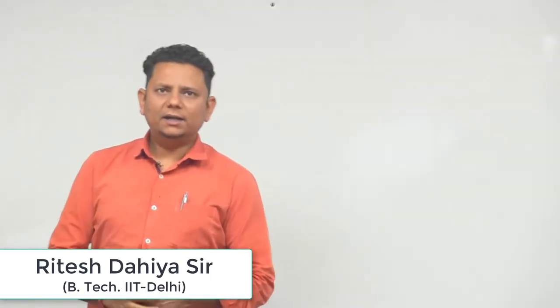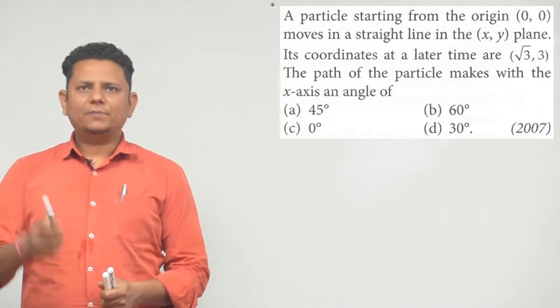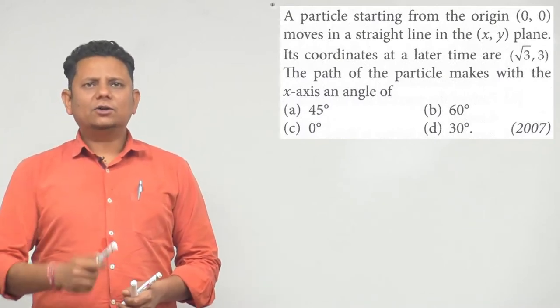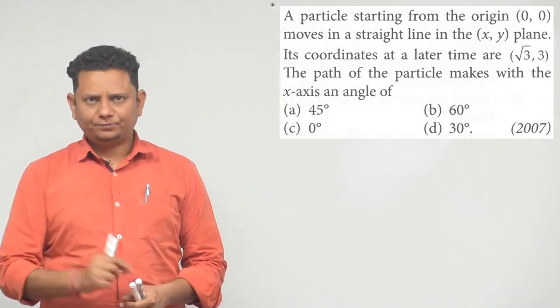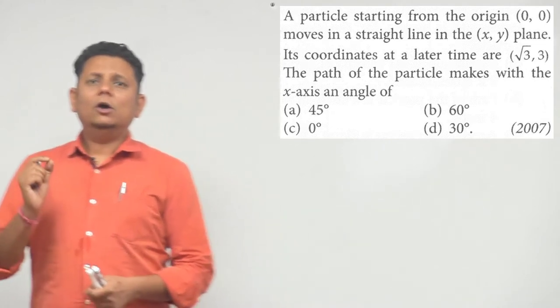Next question: a particle starting from the origin (0, 0) moves in a straight line in the xy plane. Its coordinates at a later time are (√3, 3). We need to find out what is the angle